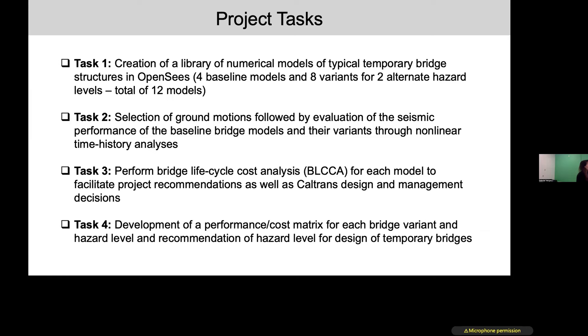Then in Task number two, we are going to select the ground motions and evaluate the structural response for each of these bridges as obtained from the full set of nonlinear dynamic simulations. In Task number three, we are going to perform a bridge life cycle cost analysis for each of these models. And finally in Task number four, we will collect on the results of the other tasks and develop a performance cost matrix for each bridge variant and hazard level. We will provide recommendations and the basis for making informed hazard-based and risk-based decisions.